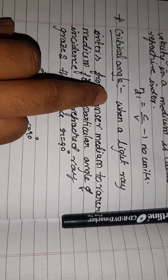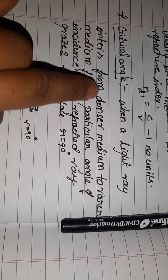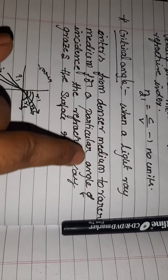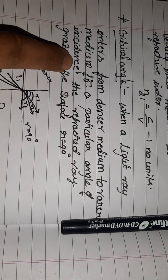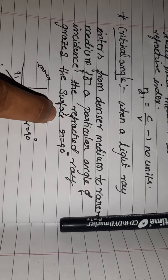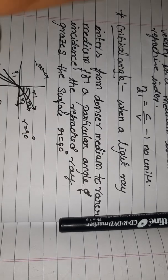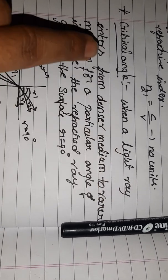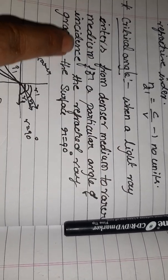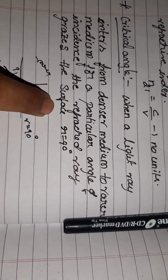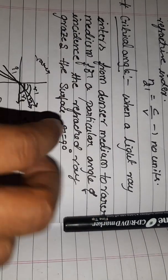This brings us to the critical angle. When a light ray enters from a denser medium to a rarer medium, for a particular angle of incidence, the refracted ray grazes the surface — meaning R is equal to 90 degrees. That particular angle of incidence is called the critical angle.